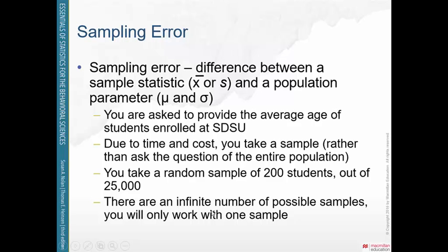As you might imagine, there are an infinite number of possible samples — theoretically. If I have all 25,000 students' names in a giant hat and pull out 200 randomly, that's one sample. I could put those 200 names back, mix it up, pull out another random 200, and now I have another random sample. I could repeat this an infinite number of times, and each sample would be slightly different.